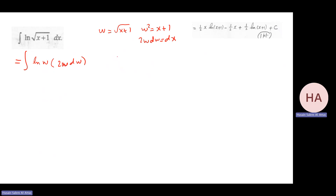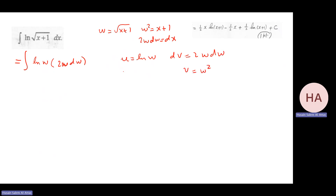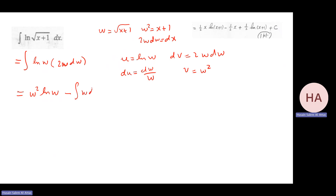For integration by parts: let u = ln(w) and dv = 2w dw, so v = w² and du = dw/w. The integral becomes w² ln(w) minus ∫ w² · (1/w) dw = w² ln(w) minus ∫ w dw = w² ln(w) minus w²/2 + C.